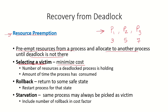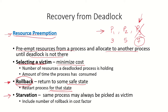There is another thing we need to take care of, which is rollback. If resources have been preempted from process P3, that means the process has to return to some previous safe state. Since P3 was already computing and has reached a certain state, it has to be rolled back to some previous safe state, and whenever it starts computation next it will start from that particular state.